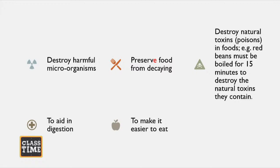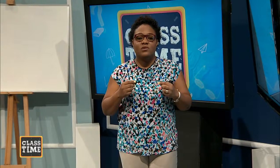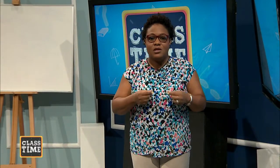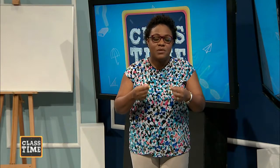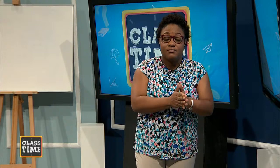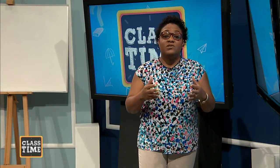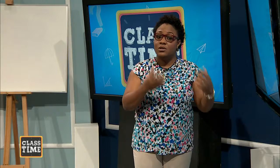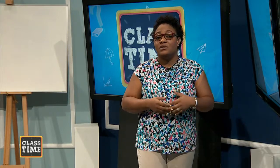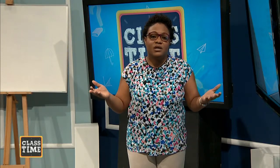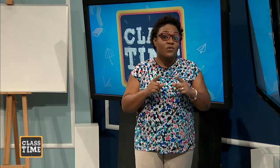We also cook to preserve food from decaying. When you do not cook foods, they continue to ripen in their raw state because of enzymatic actions happening in the foods — leave it uncooked and it will just decay and waste. For example, with ackee in season and in surplus, most persons boil it and freeze it so they have it outside of season, preserving it from decaying.